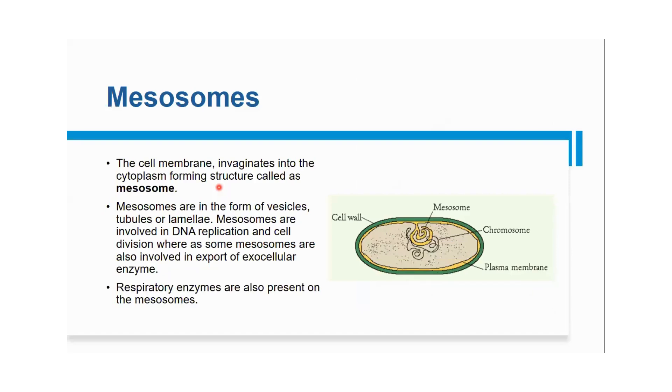Mesosomes: The cell membrane invaginates into the cytoplasm, forming special structures called mesosomes. This cell membrane invaginates within the body of the bacterium to become mesosomes. They are formed of vesicle-like, tubular, or lamellar structures.